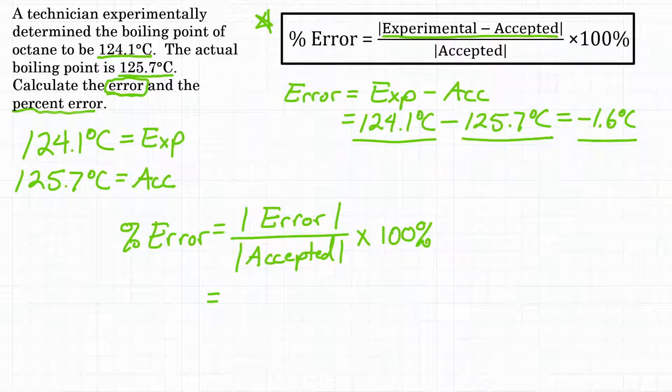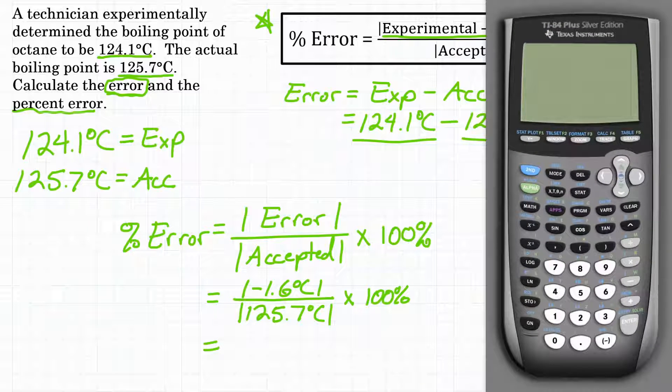So on top of our fraction, we will have the absolute value of negative 1.6 degrees Celsius, because we calculated that for our error above. And then under that, we have the absolute value of our accepted value, which is 125.7 degrees Celsius. And then again, times 100% to get to a percentage. So let's solve this in our calculator so we can get our final answer.